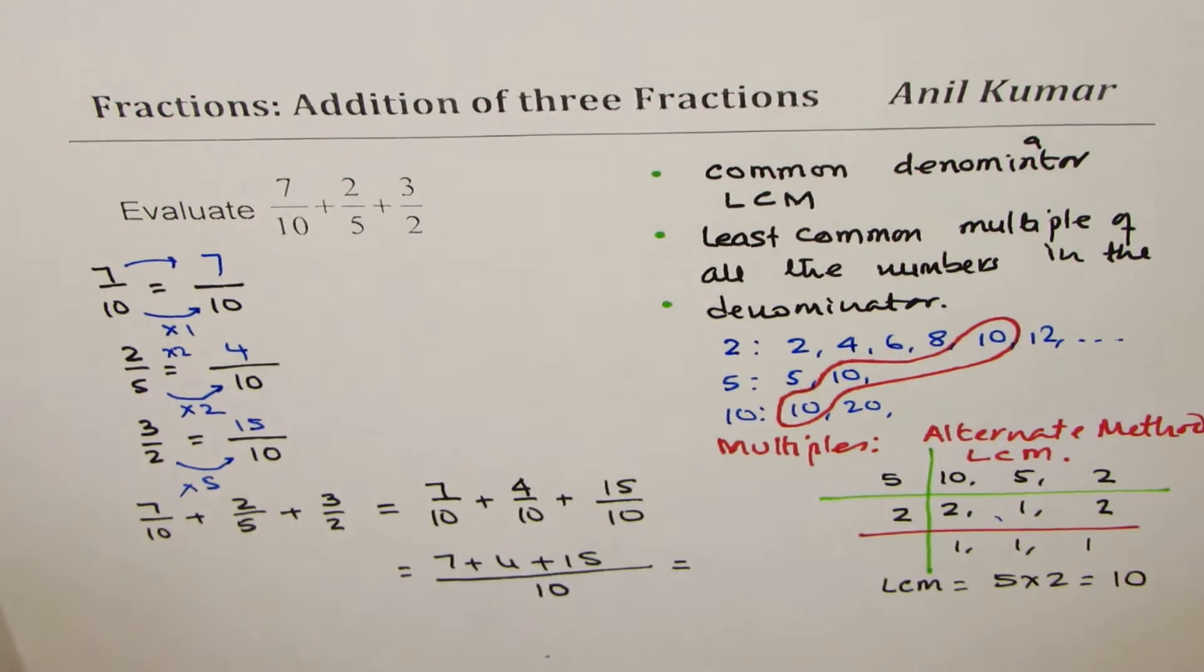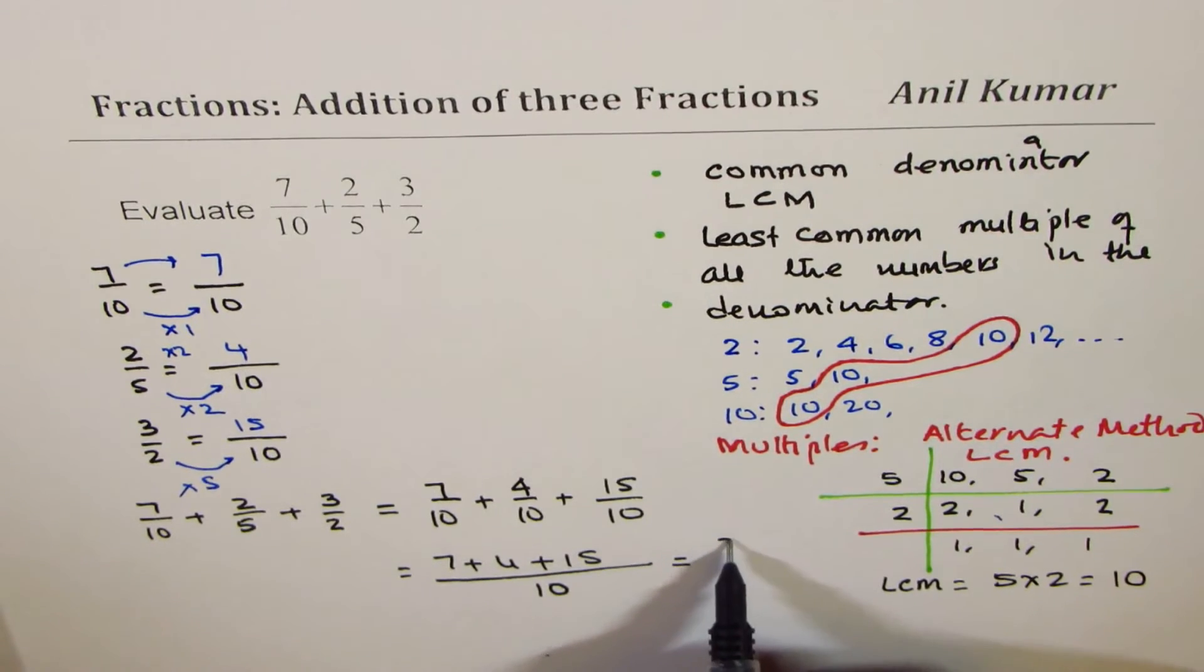So that is how you could do it. 7 plus 4 is 11, 11 and 15 is 26 over 10.